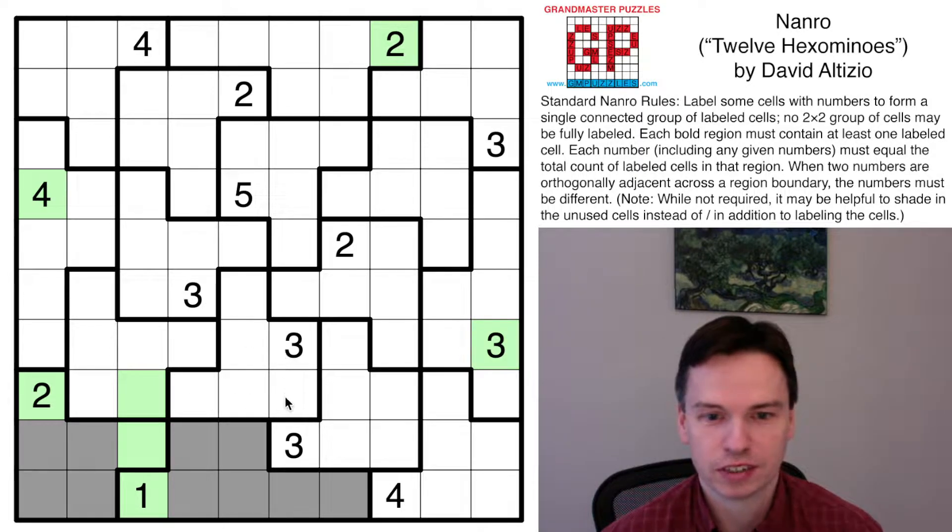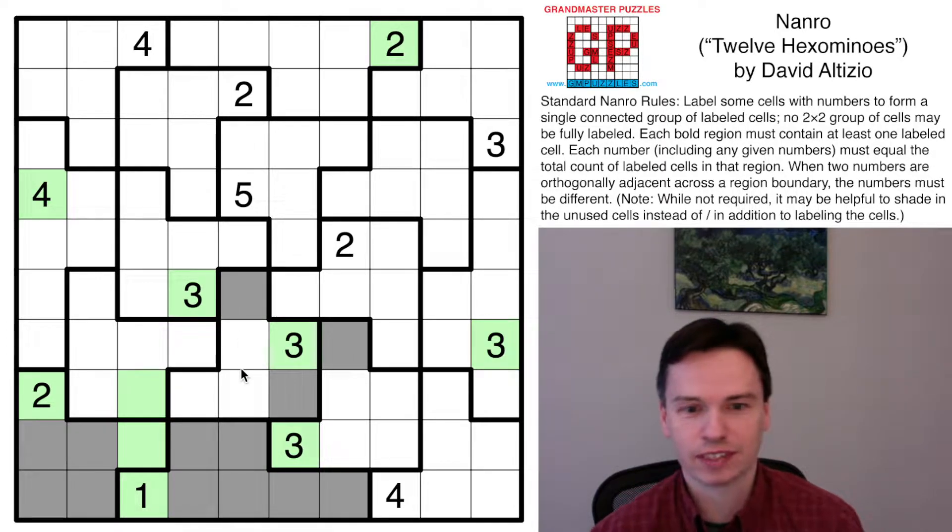But another thing that I'm seeing is a tension across these touching threes as an instance. So I'm not able to use these cells, not able to use that cell. This three has to connect to the rest of something, so it's going to come all the way over to the right. That's going to force it to work with this four clue.